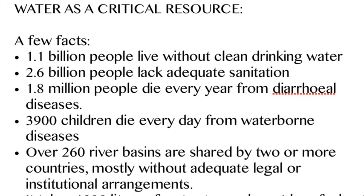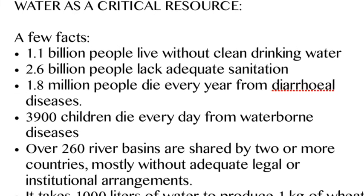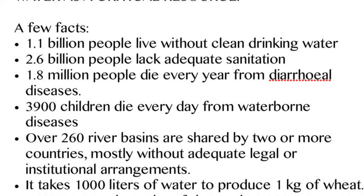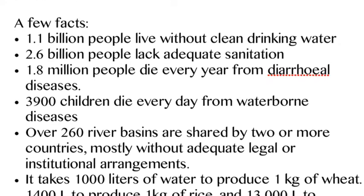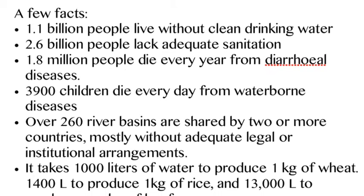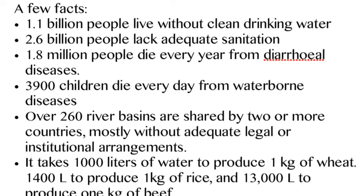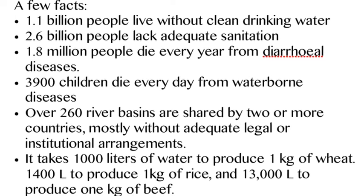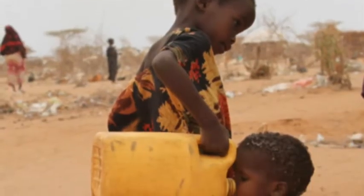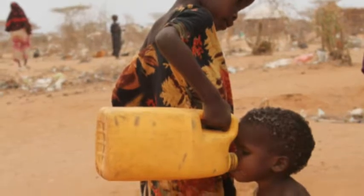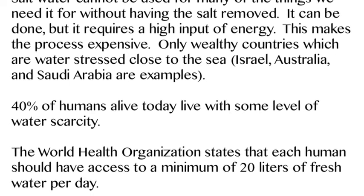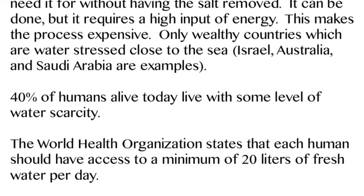This is an example of how water becomes a huge critical resource. Over a billion people don't have clean drinking water. 2.6 billion don't have good sanitation, which causes disease, and because of that almost 2 million people die every year from diarrheal diseases. 39,000 people die from waterborne diseases. Rivers are shared by more than one country, causing disputes, and places start to run out of water because some country takes it before it gets downstream.